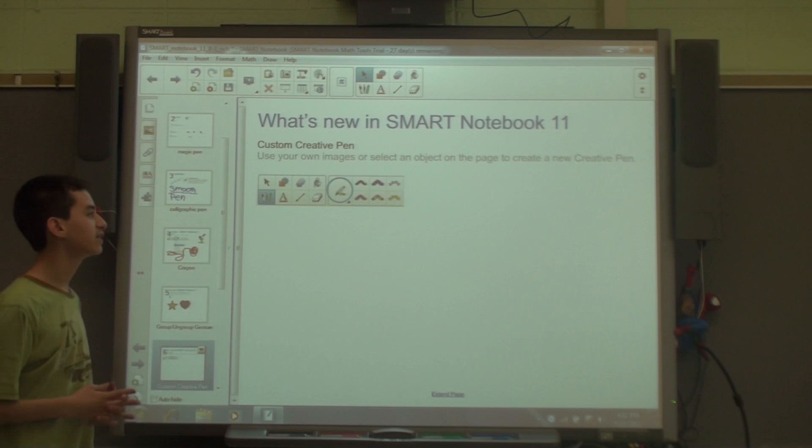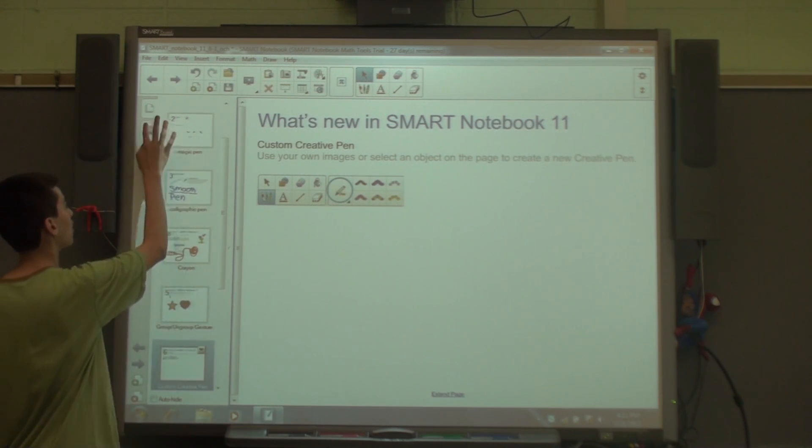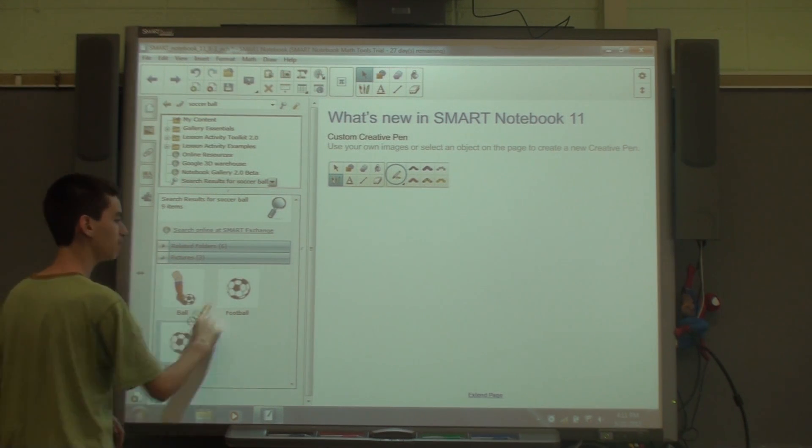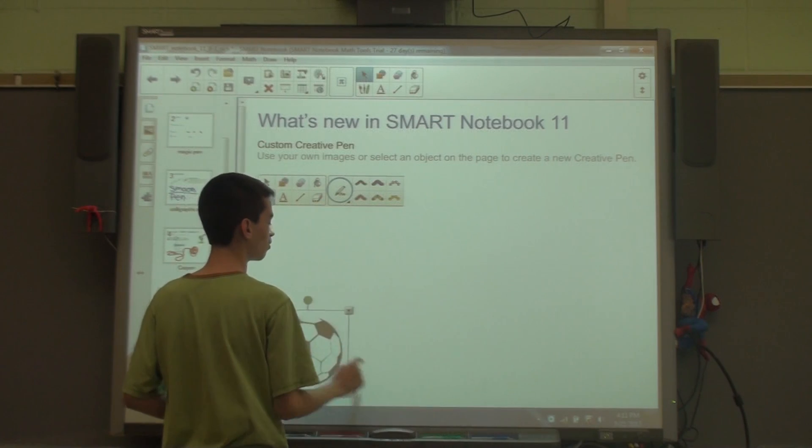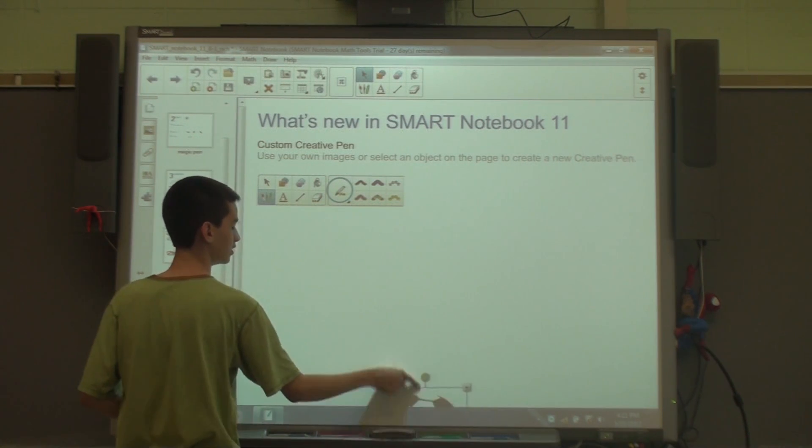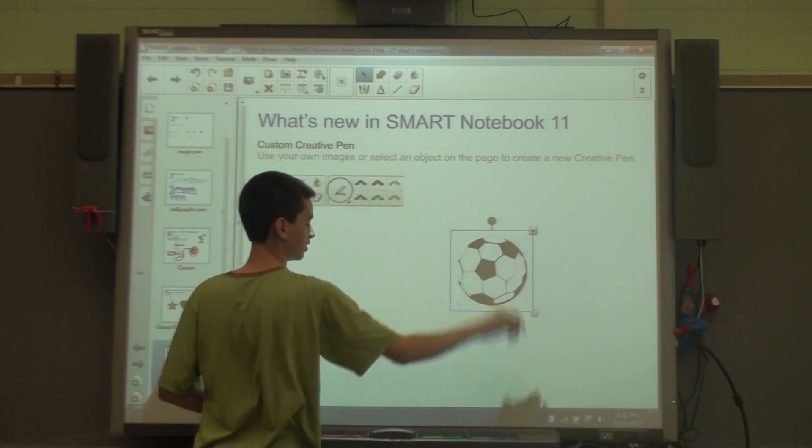Next on Smart Notebook 11 is to create your own creative pen. I'm going to click on the gallery, pull up an image of a soccer ball. Now instead of playing around with a soccer ball, we're going to convert it into a creative pen. I'm going to pick up my pen, change my pen into a creative pen, go to the properties tab.